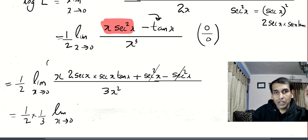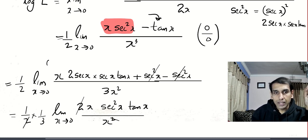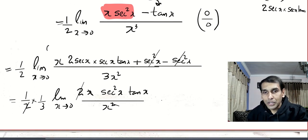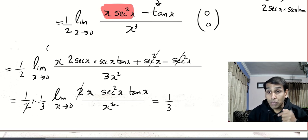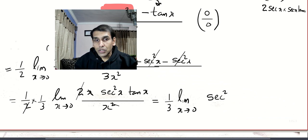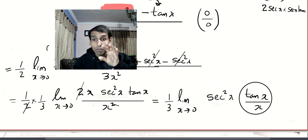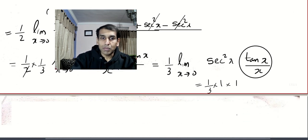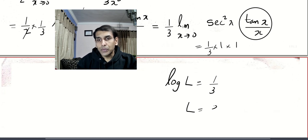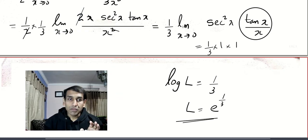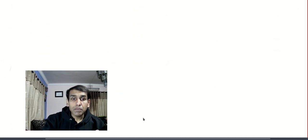Taking the limit as x tends to 0, the 2s and xs cancel, giving sec²x times tan x divided by x. Writing this as sec²x multiplied by tan x/x as an independent product, the standard limit tan x/x equals 1 as x→0, and sec²0 = 1. So log L = 1/3, therefore L = e^(1/3). This problem is very important — make sure you try it again on your own.